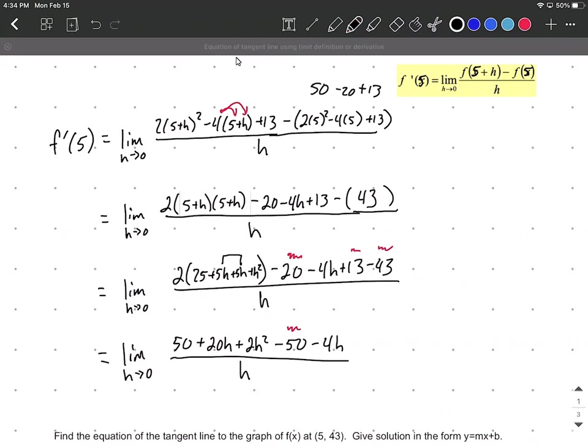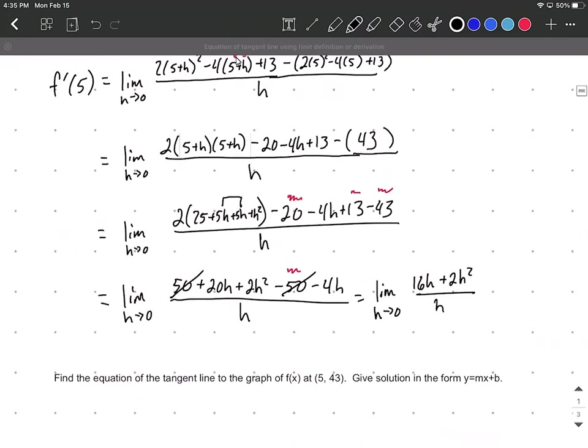The 50 and -50 cancel out. We have lim(h→0) (16h + 2h²)/h from combining like terms. All terms in the numerator have h in common, so we factor it out.